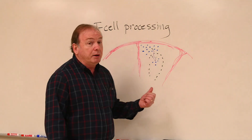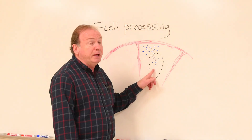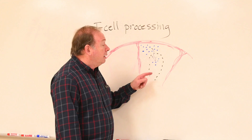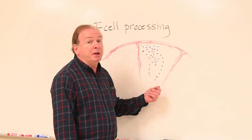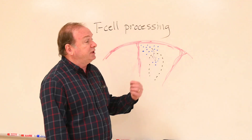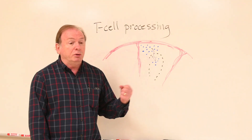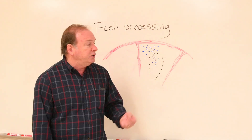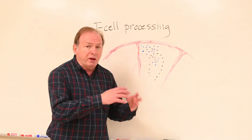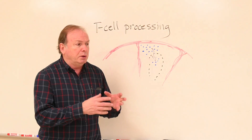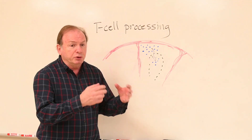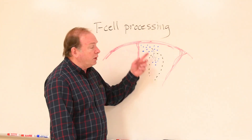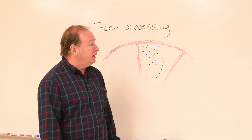After T-cells have been through both processes — the training of both the cortex and the medulla — they are put into the bloodstream and moved into what we sometimes refer to as secondary lymphatic organs. They'll move into lymph nodes, tonsils, or other diffuse lymphatic tissues in the body, where they will be able to reproduce and make more of their own kind so they can wage immune functions within the body to help defend against foreign bacteria, viruses, and so forth.